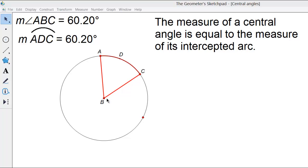And I've measured that angle, notice up here is given the measure of the angle ABC, 60.20 degrees. I've also constructed the arc that that angle intercepts, and that arc is arc ADC, and that measure is also 60.20 degrees.